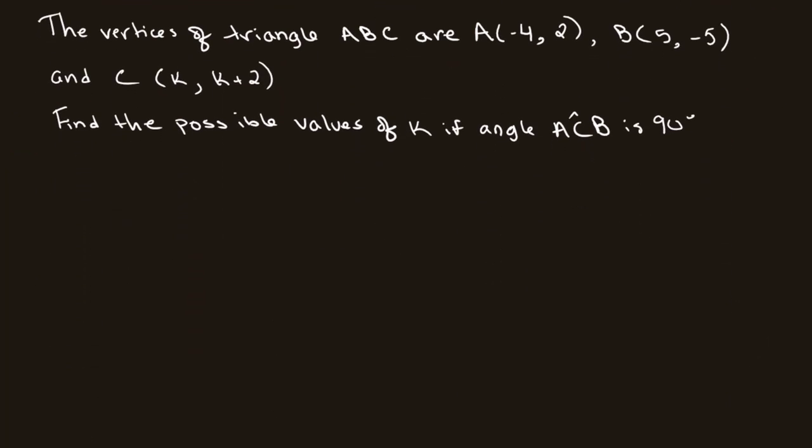Let's look at another example. This example says that the vertices of a triangle ABC are A(-4, 2), B(5, -5), and C(k, k plus 2). We have to find the possible values of k given that angle ACB is 90 degrees.